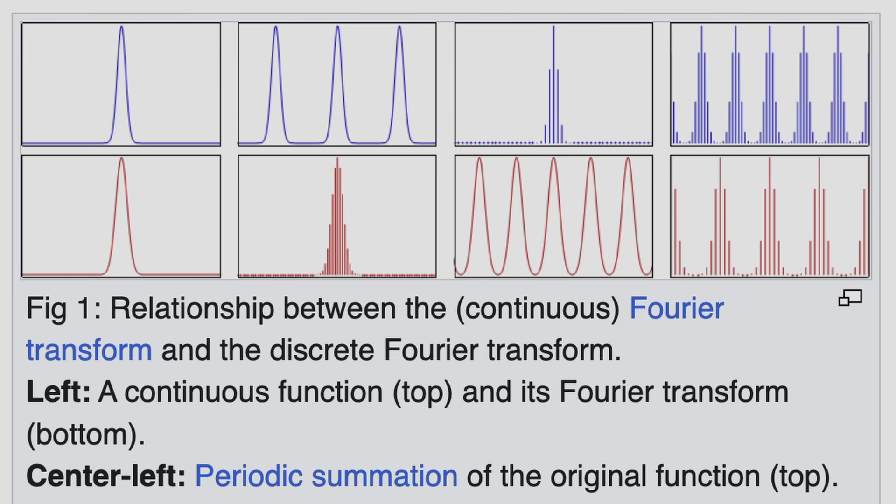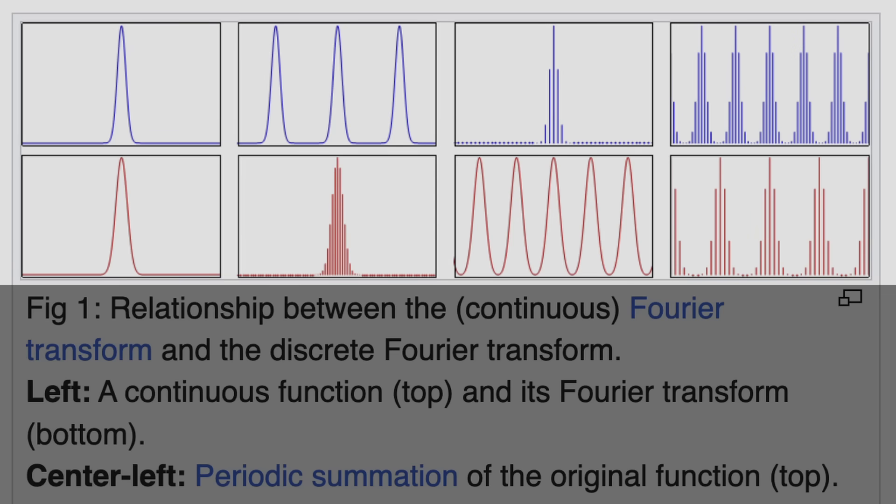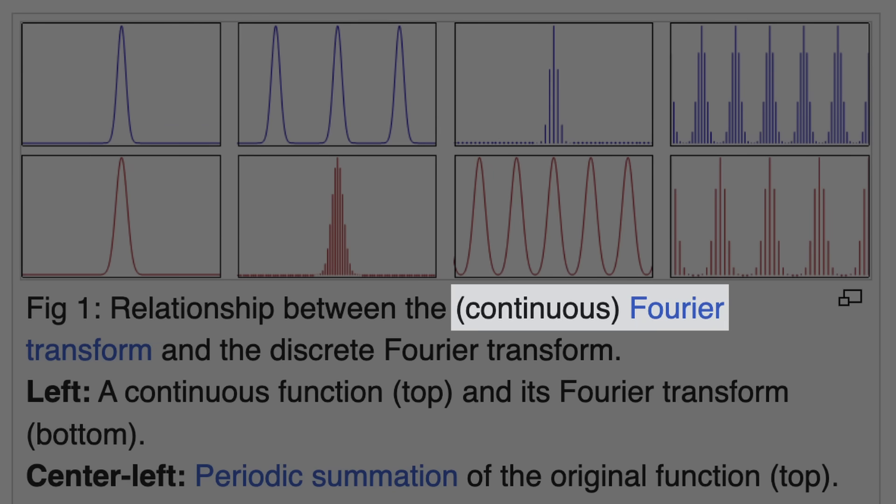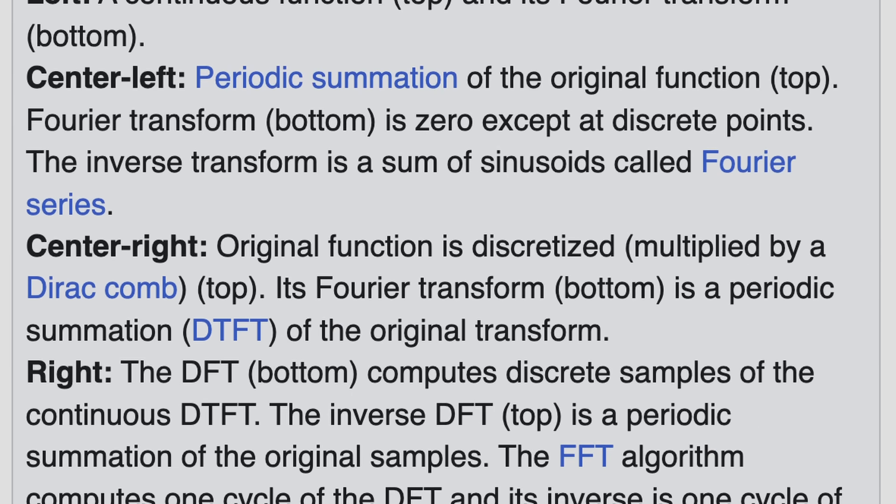Figure 1 shows the relationship between the continuous Fourier transform and the discrete Fourier transform. Note how there are no x-axis or y-axis labels on any of the graphs.